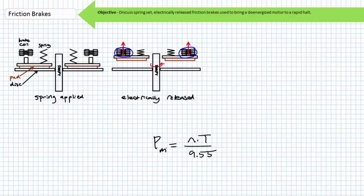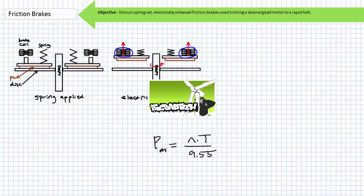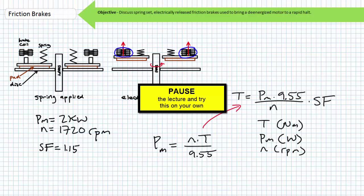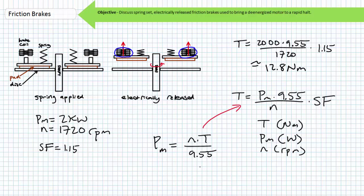As previously mentioned, friction brakes are rated according to the braking torque, which is ordinarily equal to or greater than the full load torque of the motor it is intended to stop. If the full load torque of the motor is not explicitly stated in the motor nameplate, it can be determined using a derivation of the mechanical power formula discussed extensively in the Mechanical Power, Torque, and Rotational Speed lecture available at the Big Bad Tech Channel. This time incorporating a dimensionless service factor figure that ensures the brake can do the job. Note torque is in units of Newton meters, mechanical power is in units of watts, rotational speed is in units of RPM, and the constant 9.55 is a necessary unit conversion. For example, consider a 2 kilowatt motor with a rated speed of 1720 RPM. What is the braking torque necessary to stop this motor if the brake is to incorporate a 1.15 surface factor? Pause the lecture and try this on your own. Substituting the necessary values and accounting for proper units, we find that the brake should be able to supply at least 12.8-ish Newton meters of counter torque if it is to do the job.